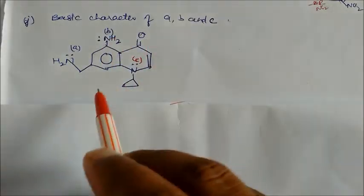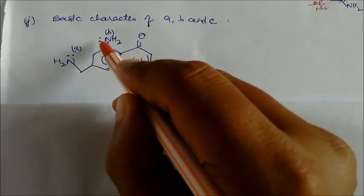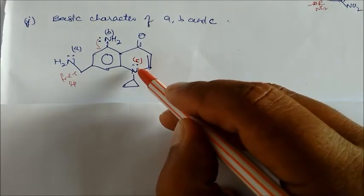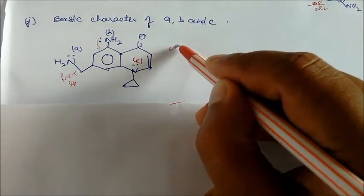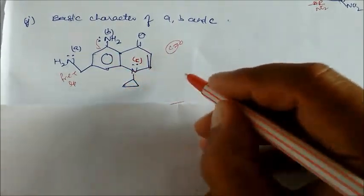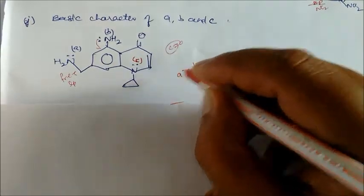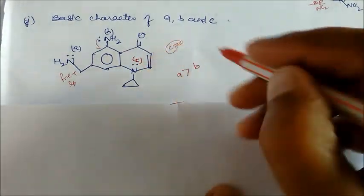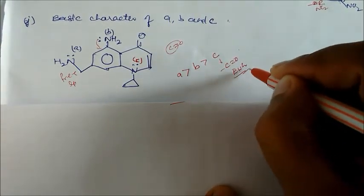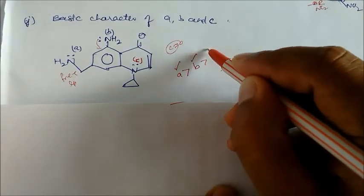For compounds A, B, and C: in A, the lone pair is free (most basic); in B, the lone pair is engaged in resonance but still forms an aromatic compound; in C, there is an electron-withdrawing carbonyl group (COA) that strongly reduces lone pair availability. Therefore, the order of basicity is A > B > C.